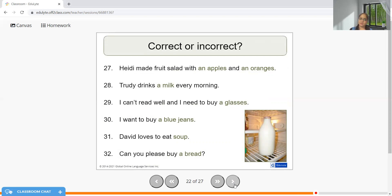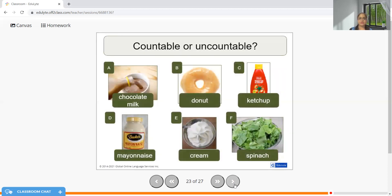David loves to eat soup. Right. Actually, it should be David loves to drink soup. Can you please buy bread, not A bread. It is bread without article. So try to guess from these pictures what is countable and what is not countable. Chocolate, milk, mayonnaise, ketchup, cream, uncountable. Donut, countable. Spinach, actually will be uncountable, but if you give it a quantity, one kilogram, half kilogram, whatever, then it can be countable to a certain extent.